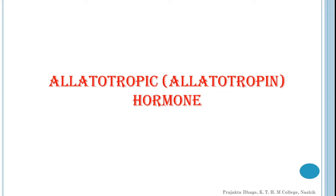The first hormone is allatotropin hormone, also called ATH. It is secreted by the cerebral medial neurosecretory cells, mostly during the development and reproductive period. It is a peptide hormone which regulates activity of corpora allata by stimulating synthesis of juvenile hormone.